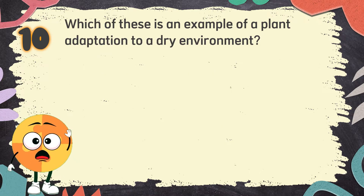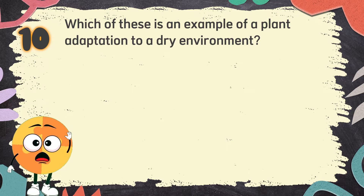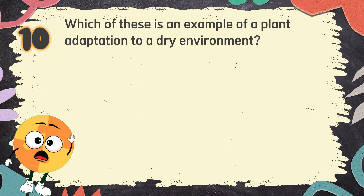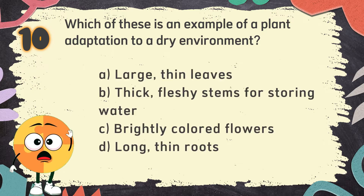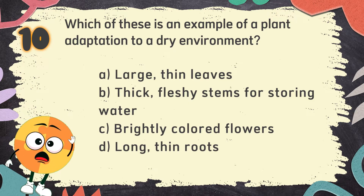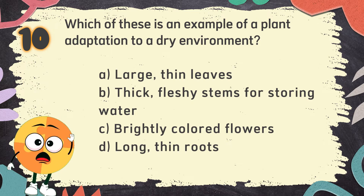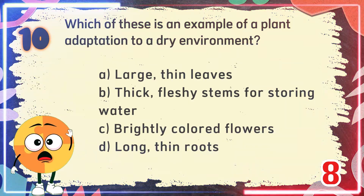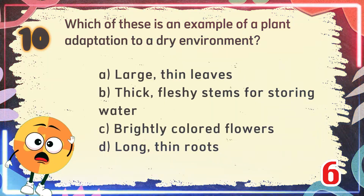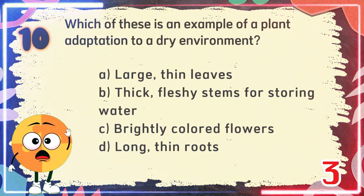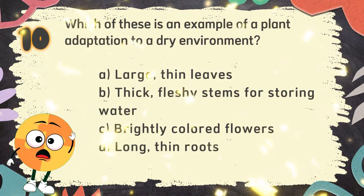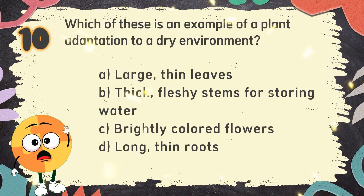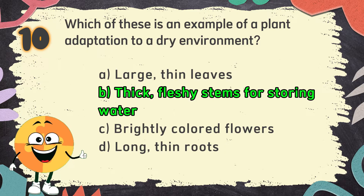Number 10: Which of these is an example of a plant adaptation to a dry environment? The choices are: A. Large thin leaves, B. Thick fleshy stems for storing water, C. Brightly colored flowers, D. Long thin roots. The correct answer is B. Thick fleshy stems for storing water.